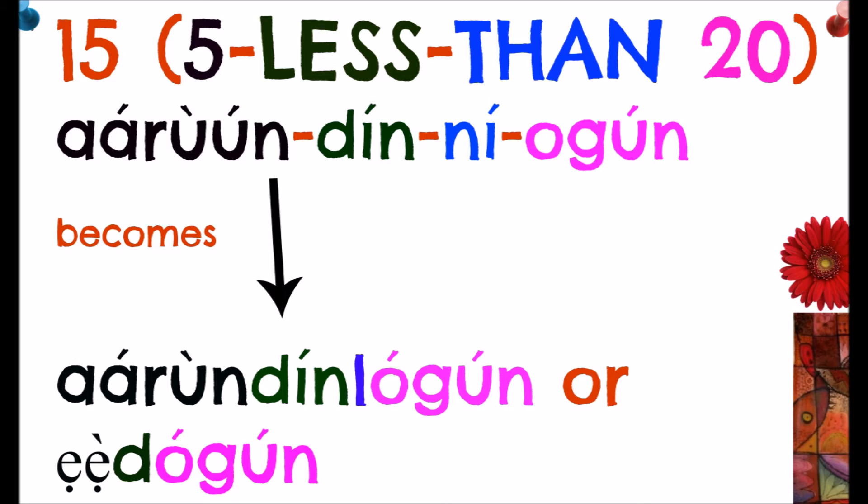Well, in the Yoruba language we do not have many whole numbers — we have tens, and that is it. From one to ten there are lots of changes in how the numeral system works. I have used colors to further explain the transliteration so that you can see how it really works.